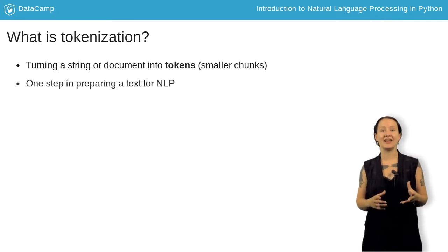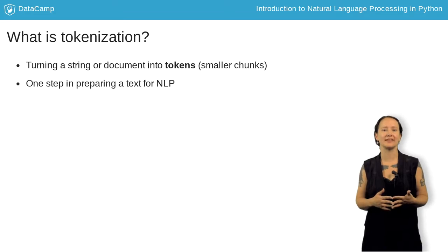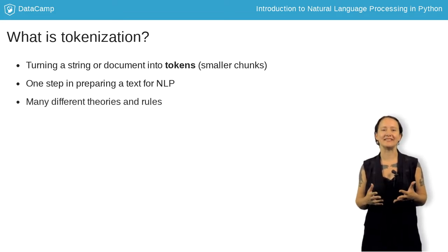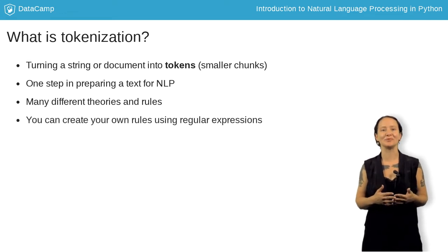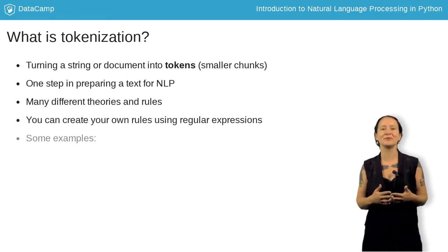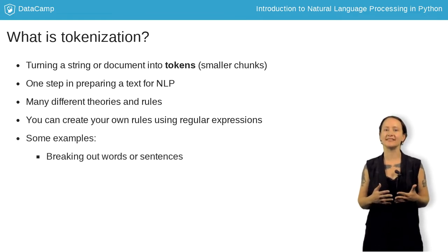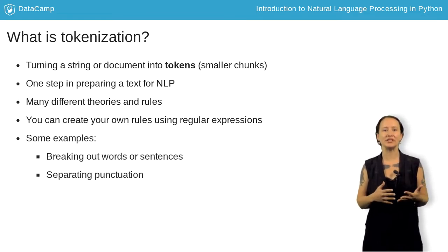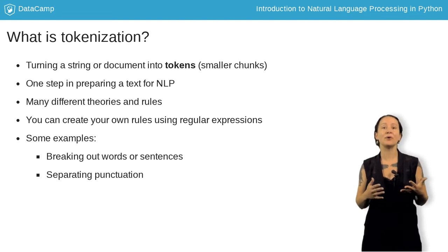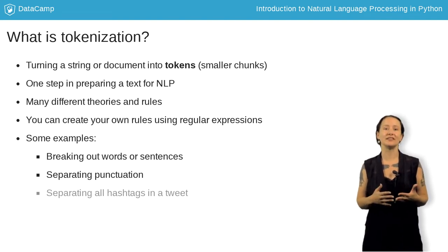This is usually one step in the process of preparing a text for natural language processing. There are many different theories and rules regarding tokenization, and you can create your own tokenization rules using regular expressions. But normally, tokenization will do things like break out words or sentences, often separate punctuation, or you can even just tokenize parts of a string, like separating all hashtags in a tweet.